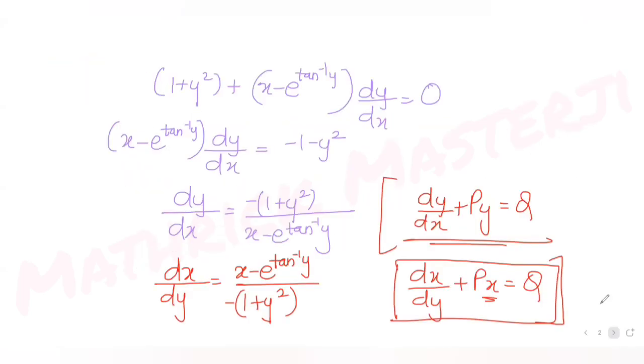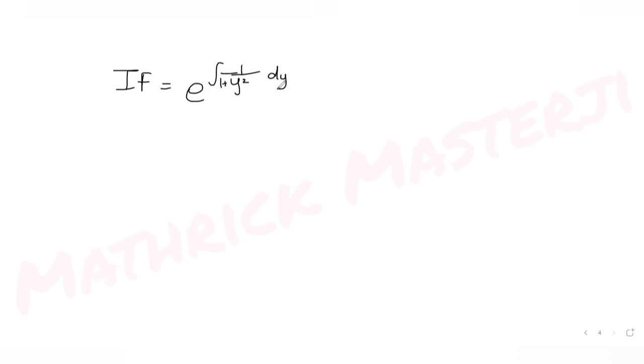Now we compute the integrating factor: e^(∫P dy) = e^(∫1/(1 + y²) dy). Since the derivative of tan⁻¹y is 1/(1 + y²), the integral is tan⁻¹y. Therefore, the integrating factor is e^(tan⁻¹y).